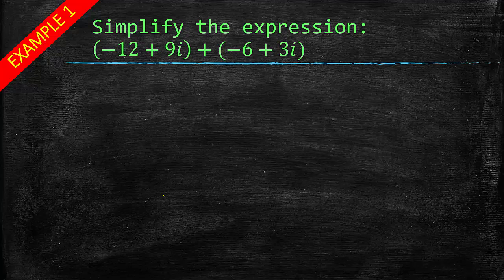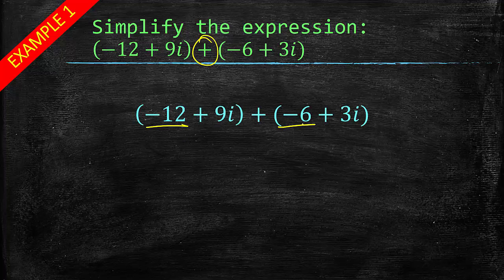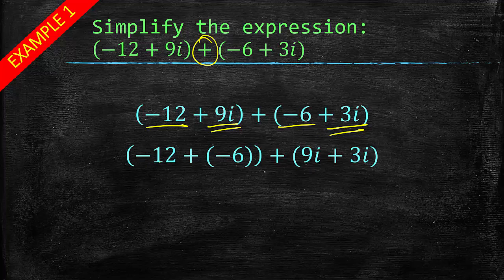Simplify the following expression: negative 12 plus 9i plus the quantity negative 6 plus 3i. This is just addition or subtraction. We have a plus sign in between, which means we don't have to worry too much about the parentheses. We can just get rid of the parentheses if we want to. But again, I would suggest grouping. So negative 12 plus negative 6 and then 9i plus 3i. Negative 12 plus negative 6 is negative 18. 9i plus 3i is 12i. So notice we're treating this just like we would a variable, as if it were like 9x plus 3x. That would be 12x, right? Same thing. The trick comes when we start getting the powers of that.